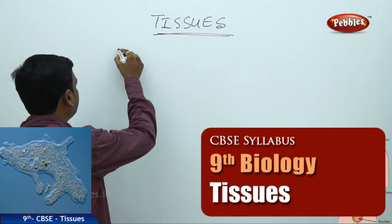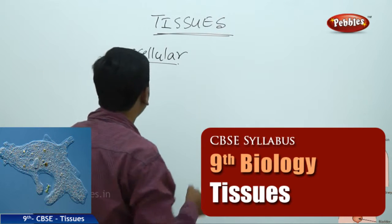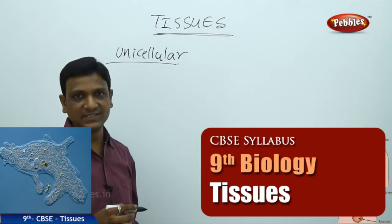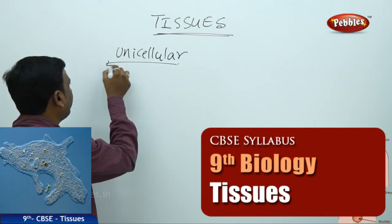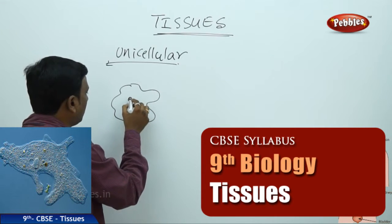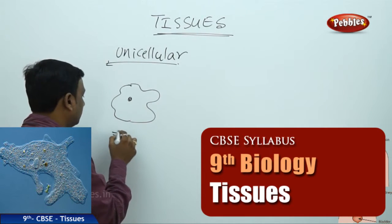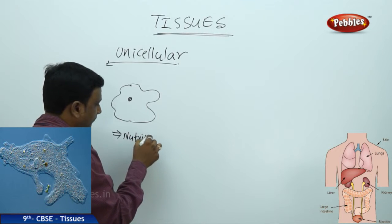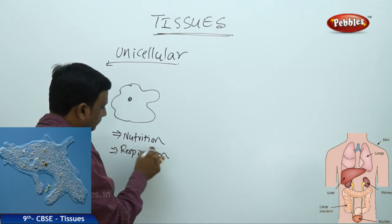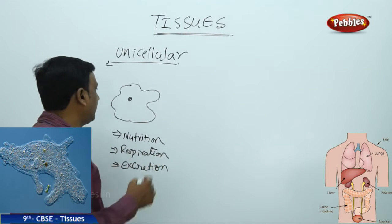In case of unicellular organisms, there is no topic of tissues, because they are only one cell throughout their life. Every life process is carried out within that single cell. If you consider amoeba, everything happens in one cell — nutrition, respiration, excretion, and even reproduction. Everything goes on in the one cell.